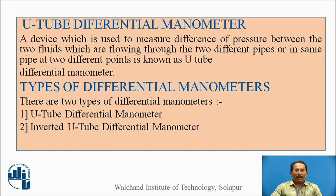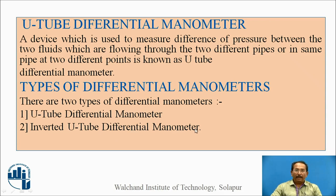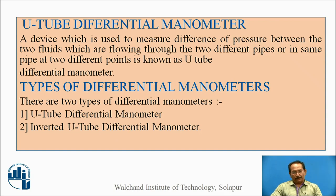The two important types are: one is U-tube differential manometer and the second is inverted U-tube differential manometer. Particularly, the inverted U-tube differential manometer is used to find the pressure difference of gas.